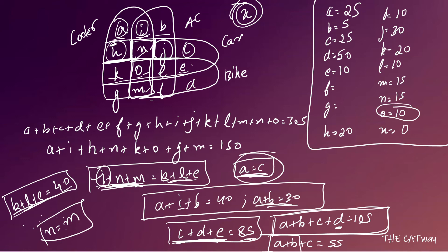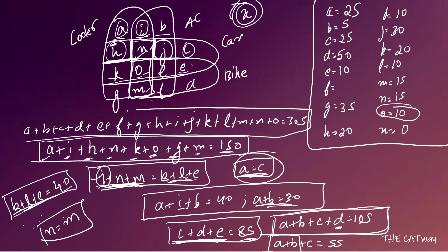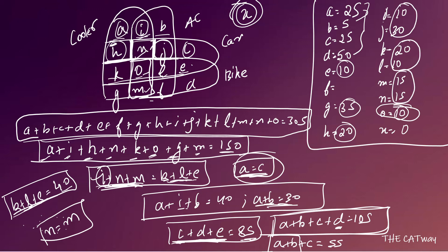Now finding G and F. For cooler owners (A + I + H + N + K + O + M + G = 150): 25 + 10 + 20 + 15 + 20 + 10 + 15 = 115, so G = 35. Adding all known values: A to D sum to 105, plus 115 from two-item regions minus F, giving total 280 so far. Since total is 305 and X = 0, F = 25.